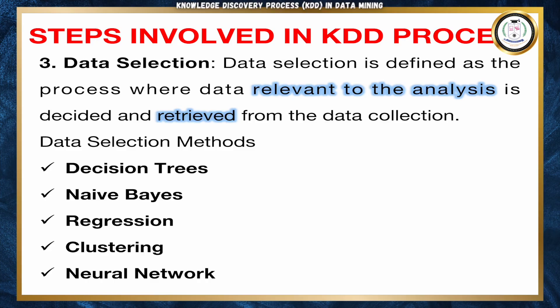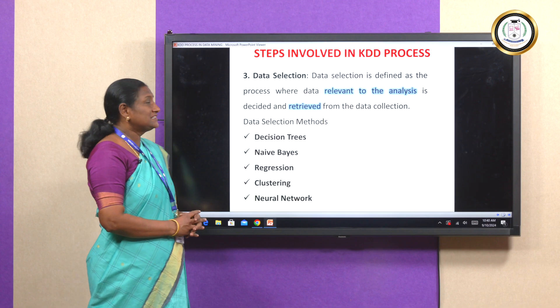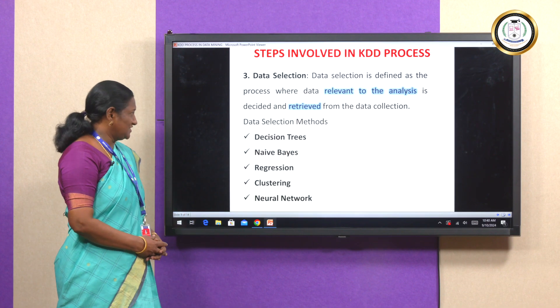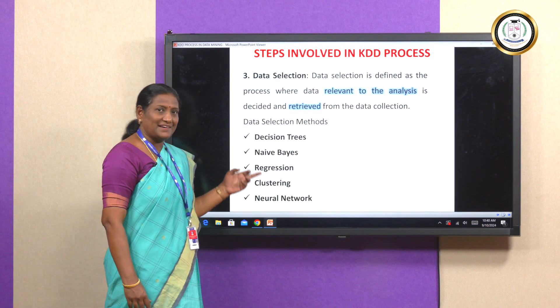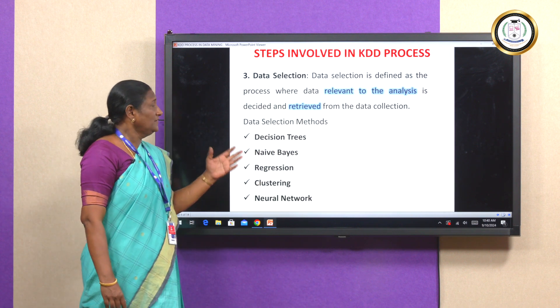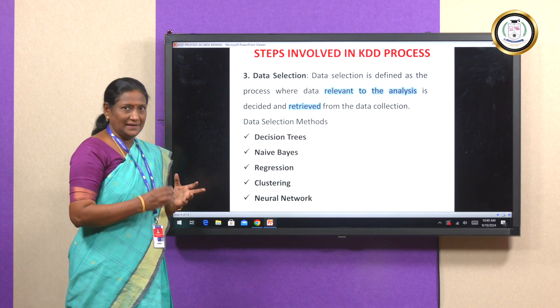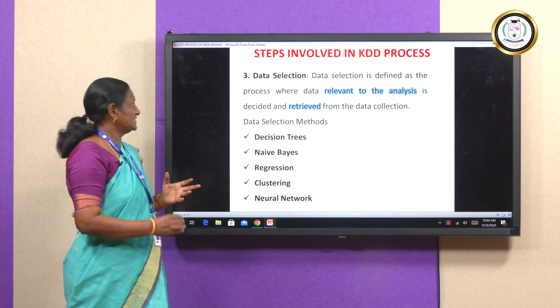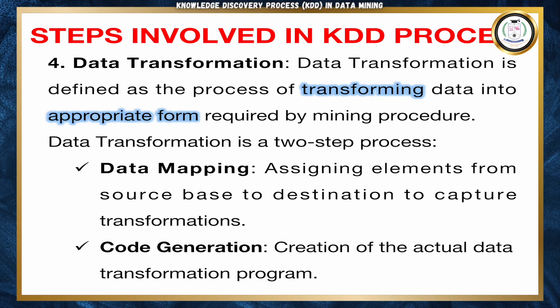Next is data selection. After integrating data from different formats, we select the relevant data needed for the current data mining process. Some data selection methods include decision trees, naive Bayes, regression, clustering, and neural networks. Using any of these techniques, the relevant data needed for the current data mining process is selected.